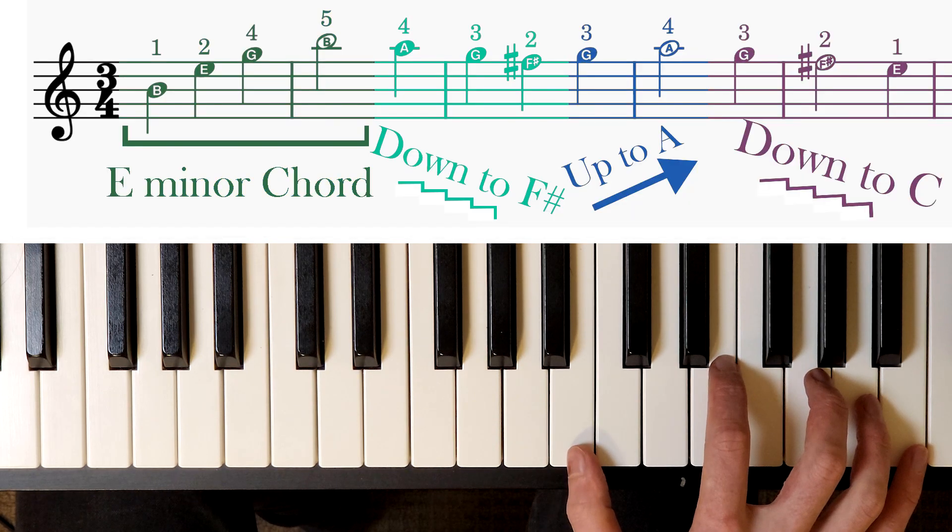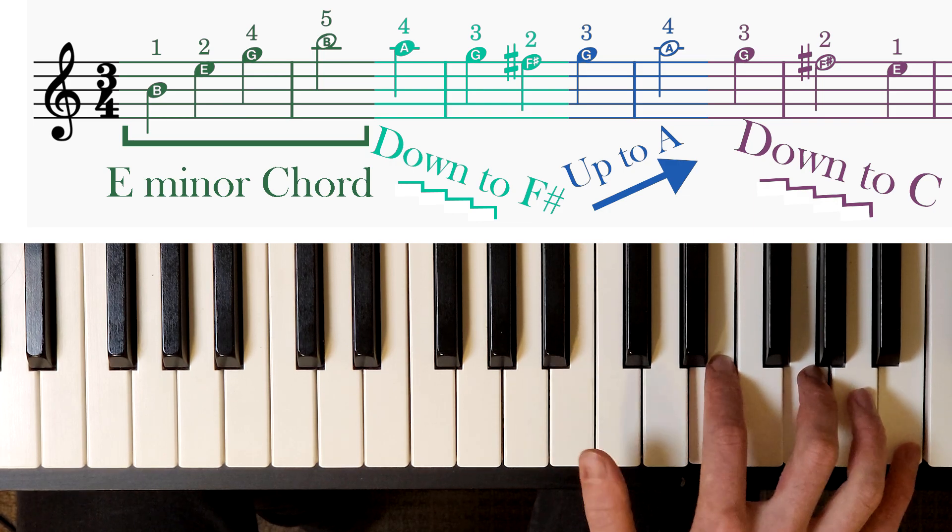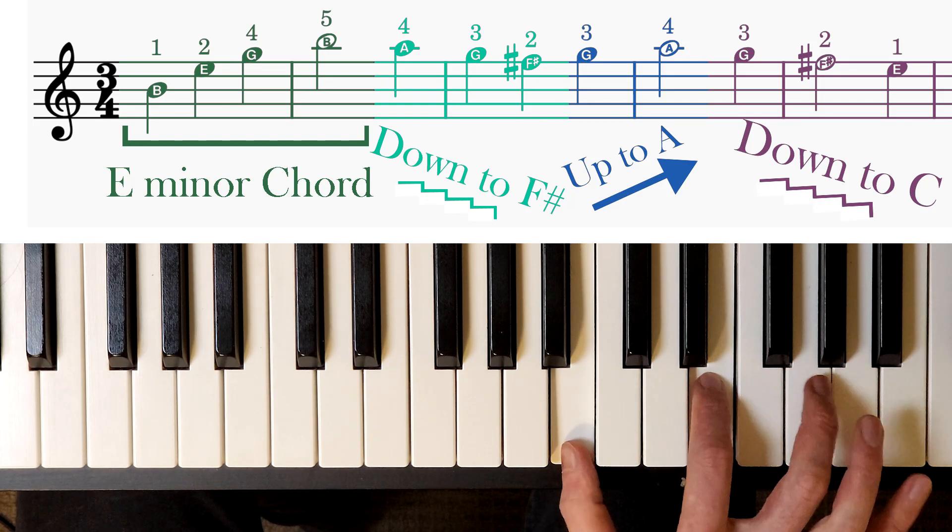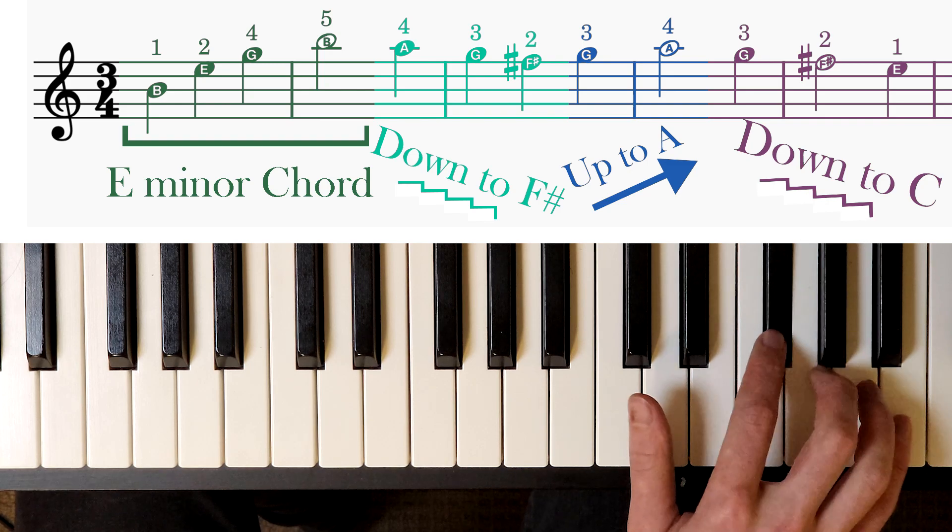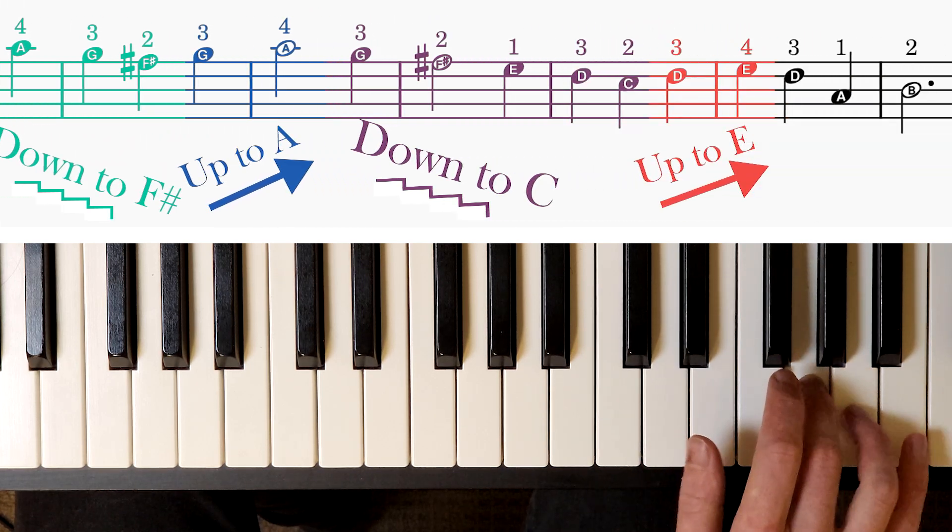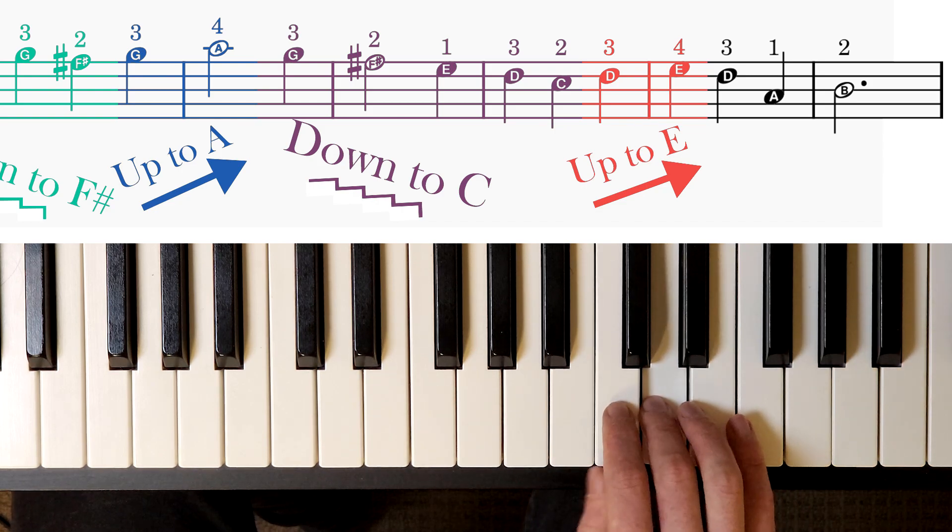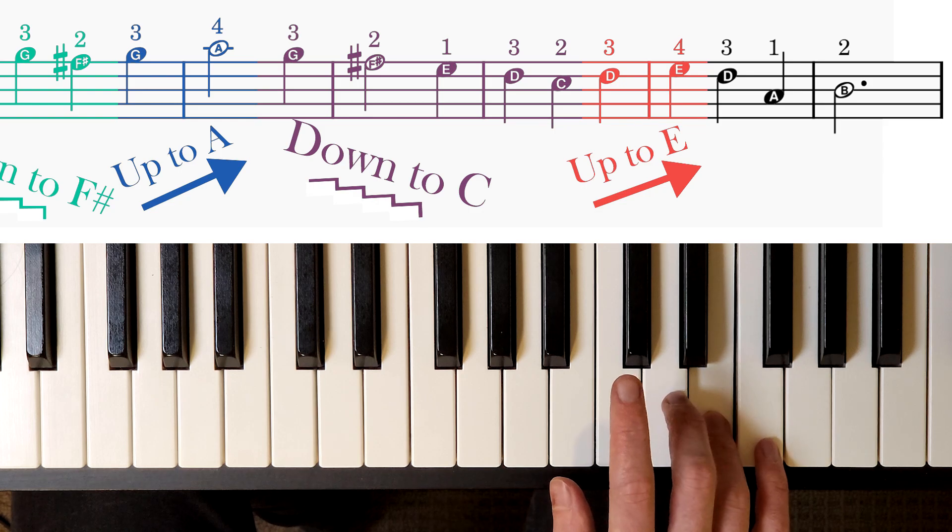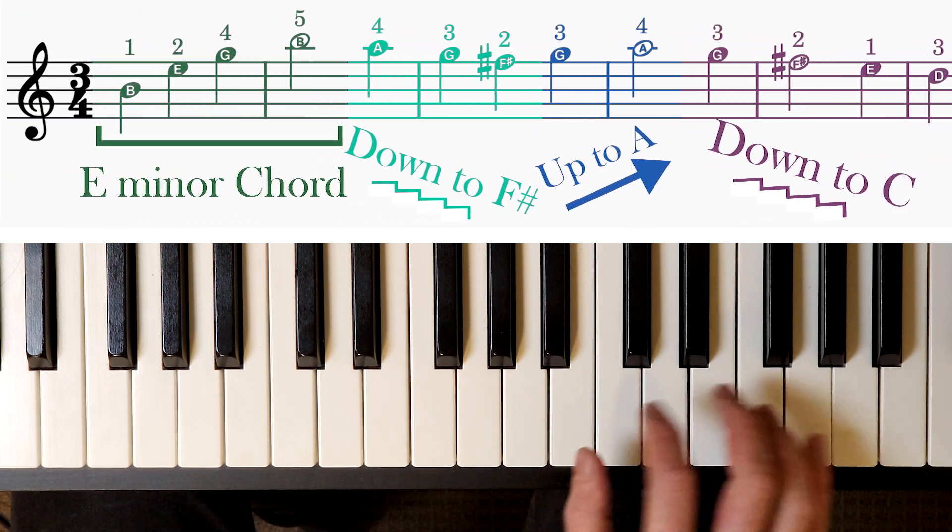Next we have an E minor chord but starting from B. We go up to the next B, go down to the F sharp, up to the A, down to the C, up to the E, then D, A, B. Altogether that sounds like this.